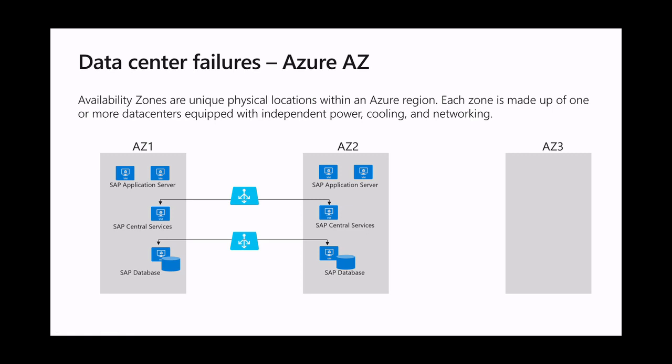Another disaster we need to protect SAP applications against is the failure of a complete data center. Similar to other cloud services, Microsoft Azure offers availability zones to cover this sort of disaster. What we see here is an SAP application spread across two availability zones within a single region in an active-active scenario. The third availability zone is currently not utilized and could be used, for example, for an iSCSI cluster storage block device. Please note that availability zones are not available in every Azure region yet, so you should check before deployment.